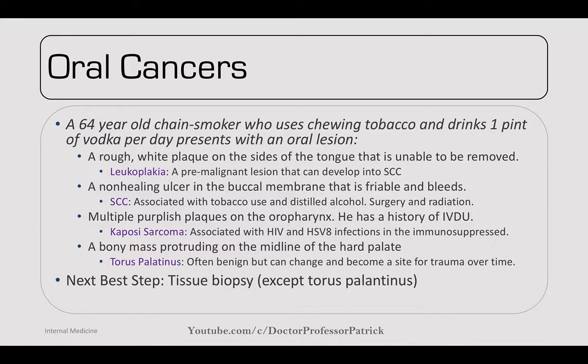If there are multiple purplish plaques in the oral pharynx and they have a history of IV drug use, think Kaposi's sarcoma. It's associated with HIV and caused by herpes simplex virus 8 in the immunosuppressed, with an increased association in Italian men. If there's a bony mass protruding over the midline of the hard palate, this is likely a torus palatinus — often benign but can become a site of trauma. The next best step is a tissue biopsy in all of these cases except torus palatinus.